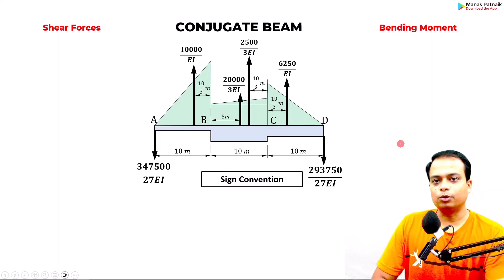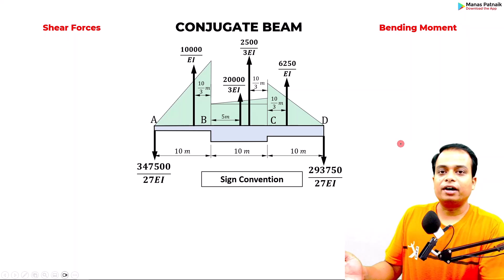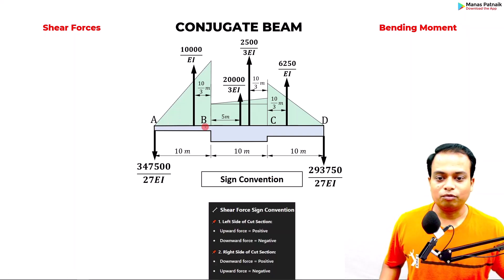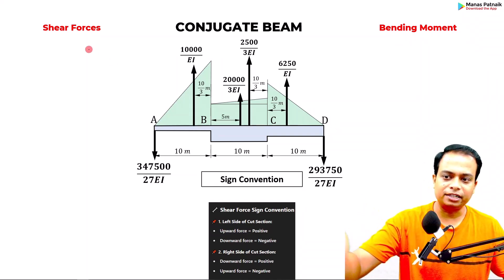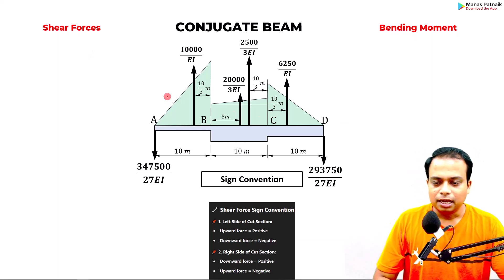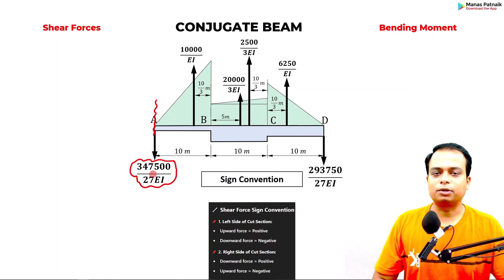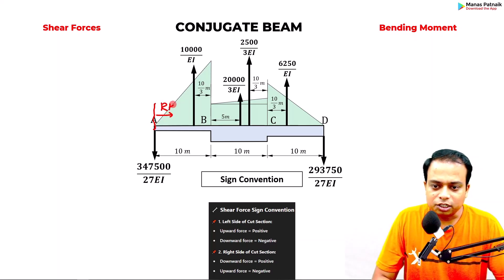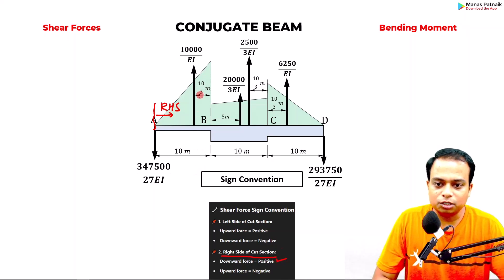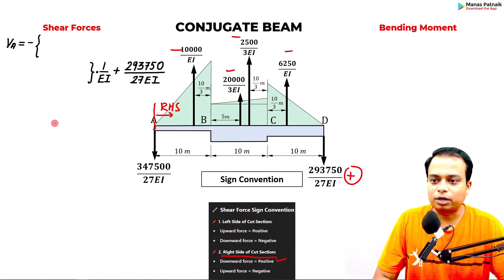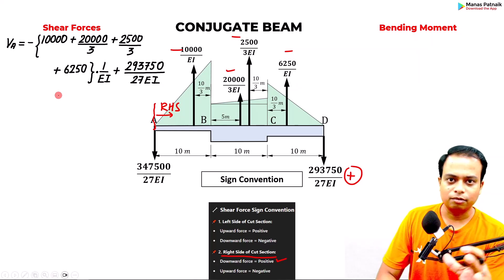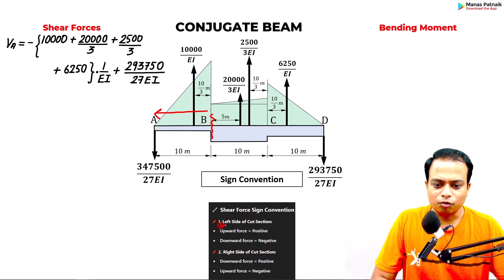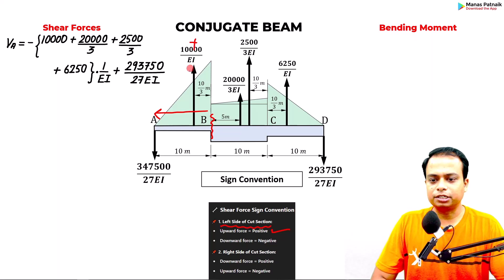Shear forces calculated for the conjugate beam are equivalent to slopes for the real beam. At A, the shear force equals RA with a negative sign based on sign convention — for the right-hand cut, downward is positive and upward is negative. At B, considering the left portion: upward forces are positive and downward forces are negative. Write the expressions and simplify.